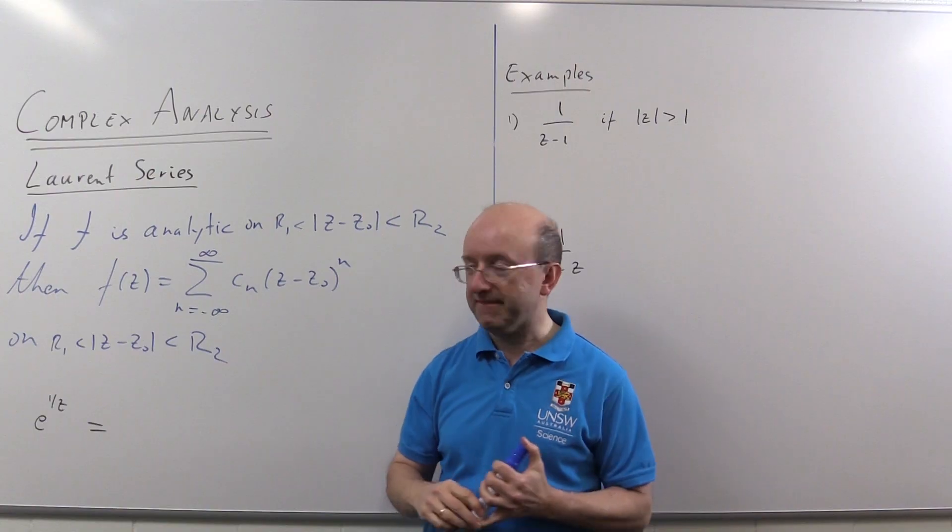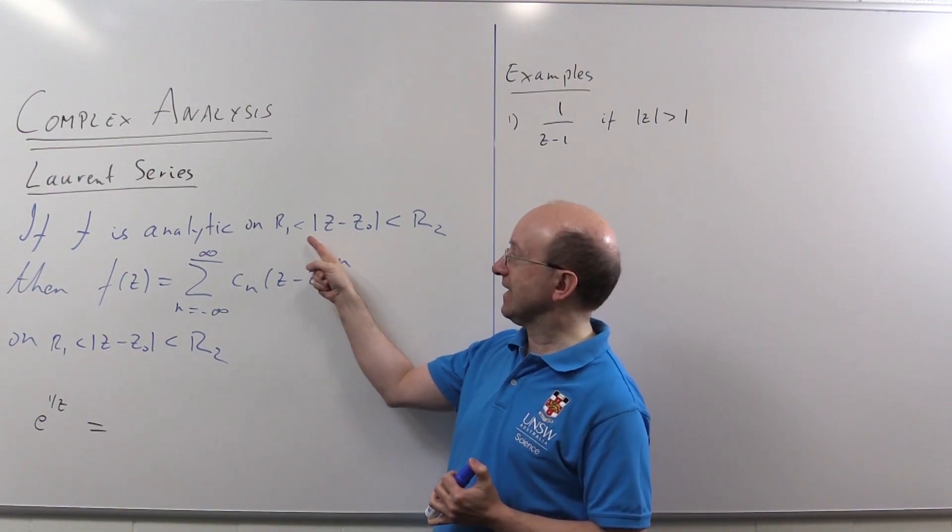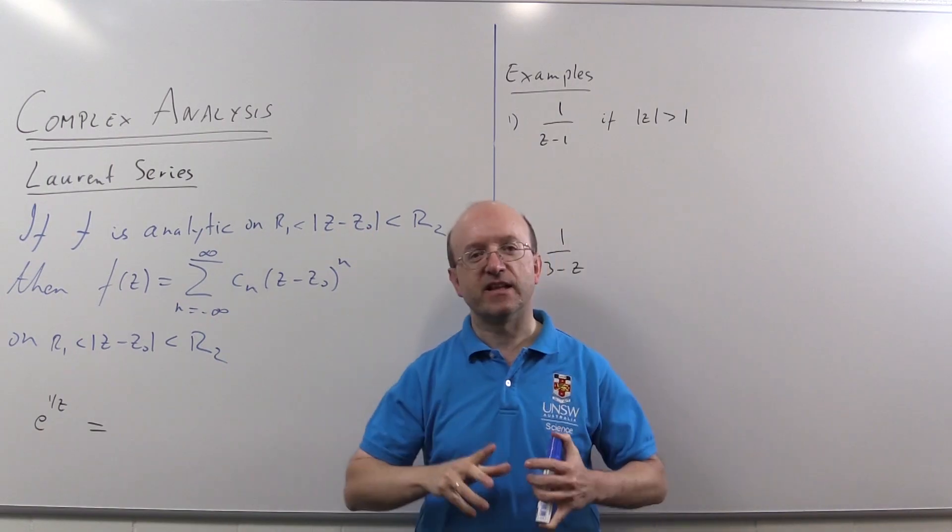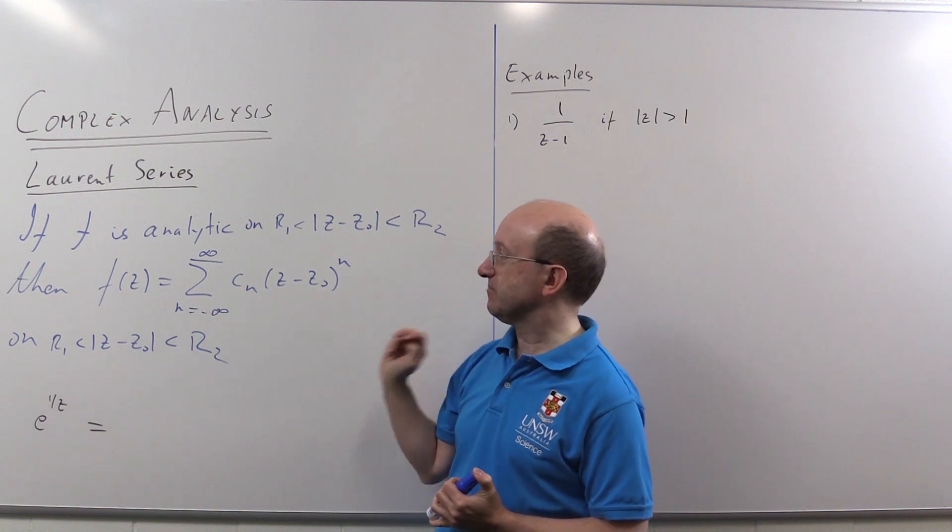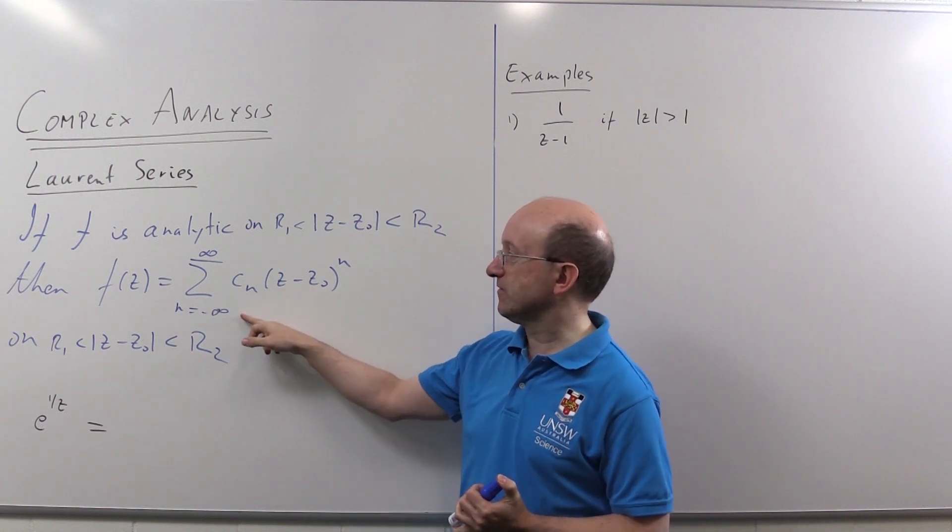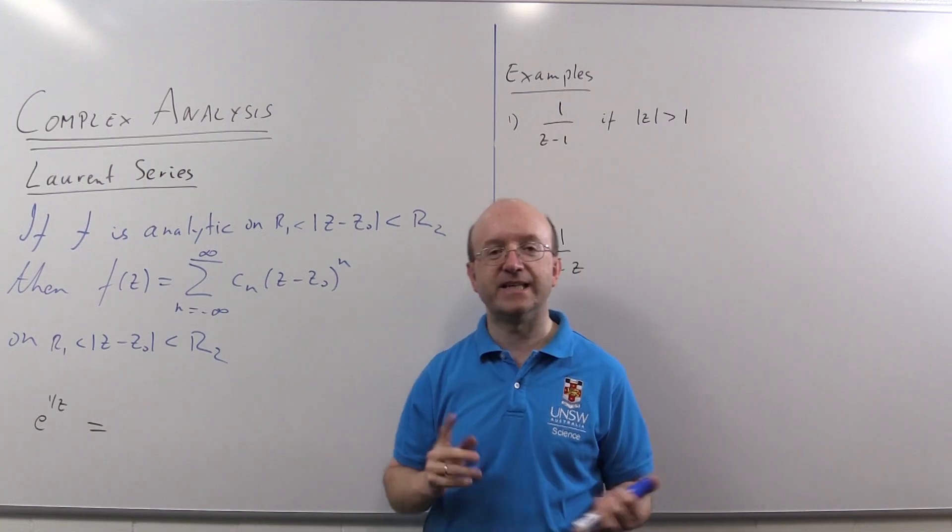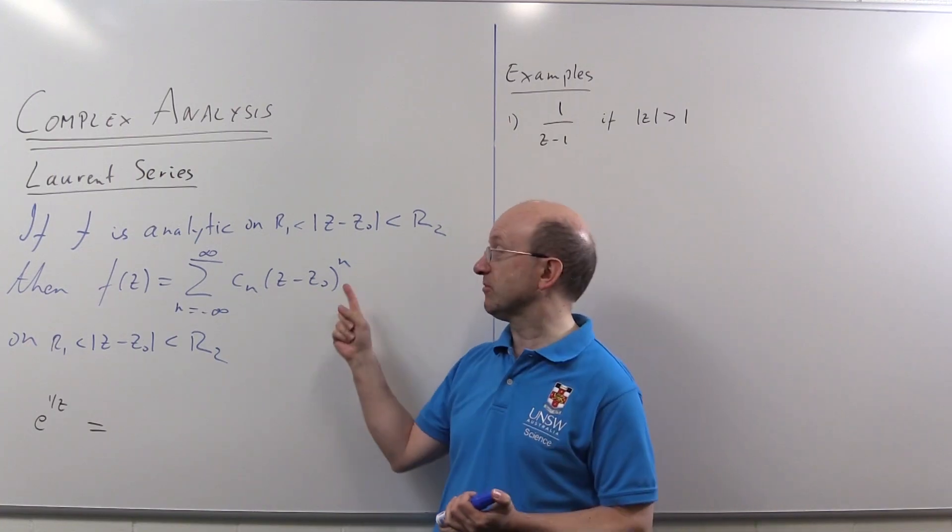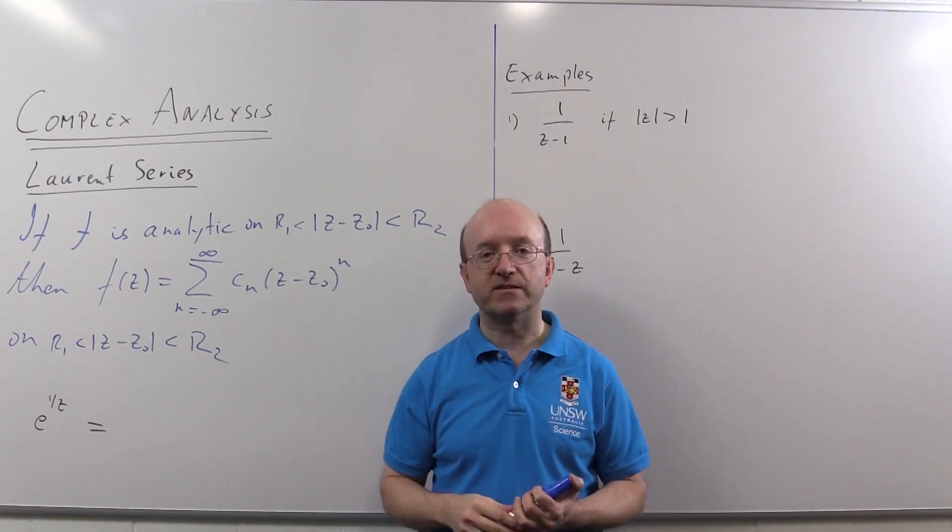If you've got a function f that's analytic on a region of this shape r1 less than |z minus z0| less than r2, that's an annulus shape, then we can write f(z) as a power series where the powers run from minus infinity possibly to plus infinity. So we're allowed negative powers; a Taylor series only had positive powers, and this series will converge on that same annulus.